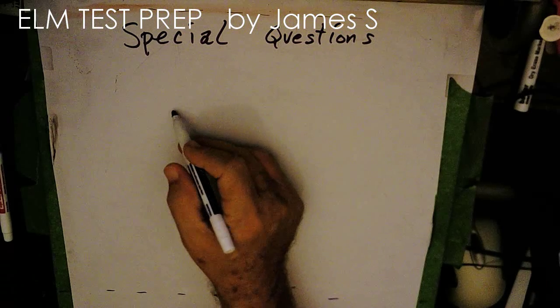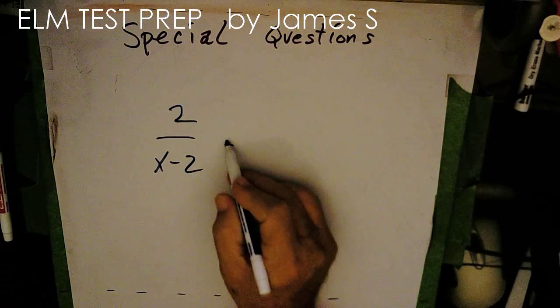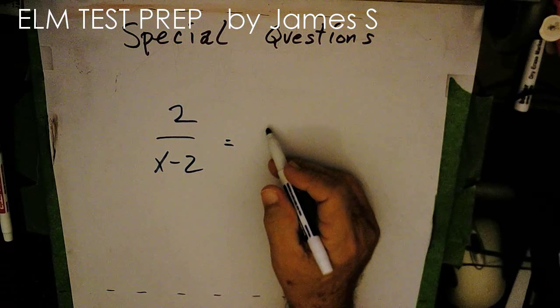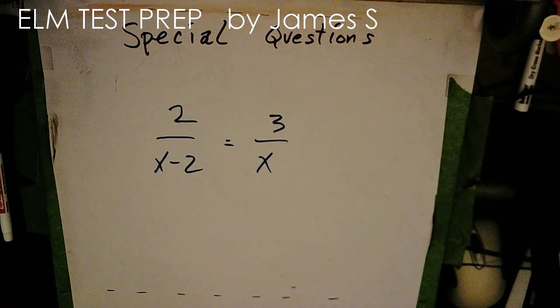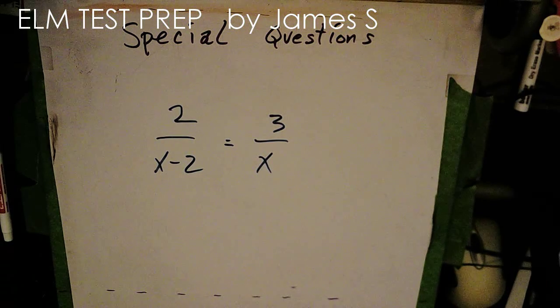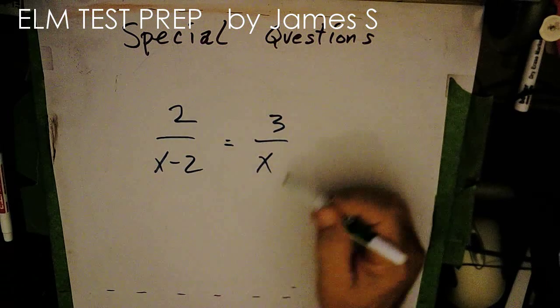Let's see if I can come up with something. Let's say we have 2 over x minus 2 equals 3 over x. So in this case, we're still looking for a value of x that would make this true.